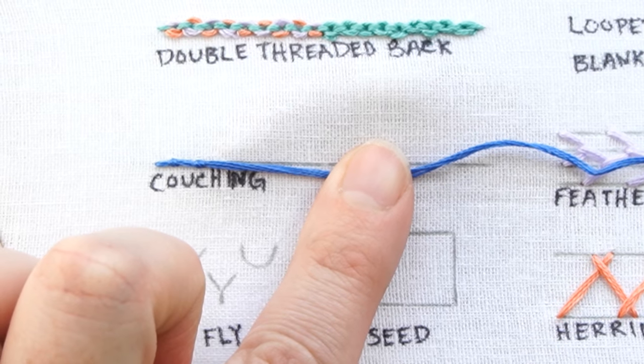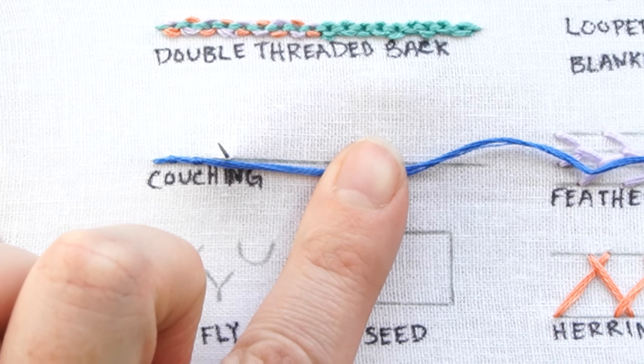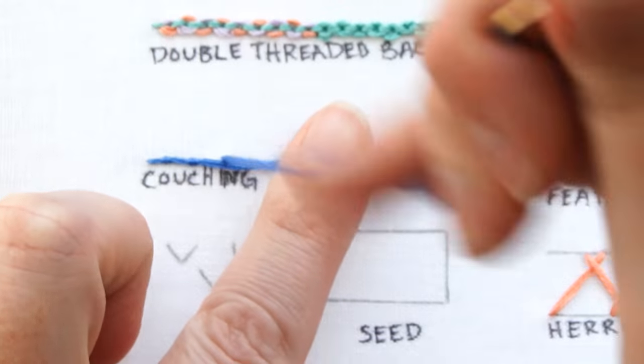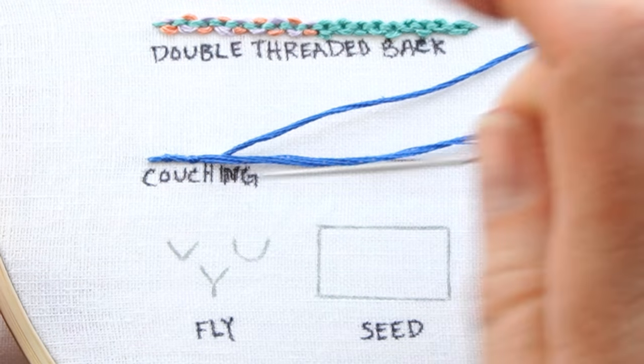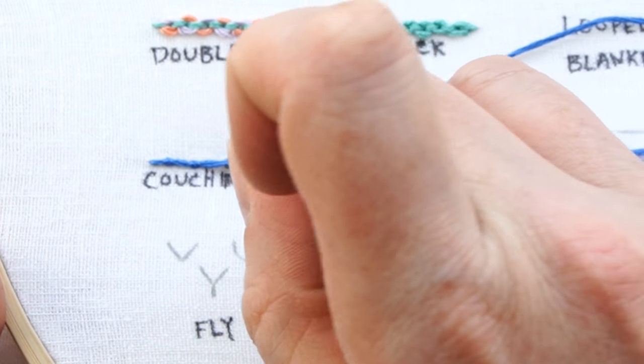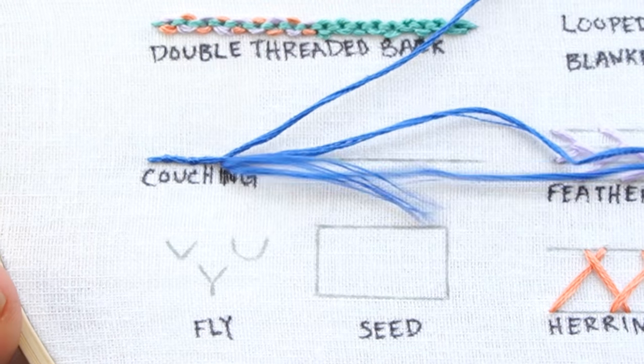Continue along the line to the top of the thread, and then a tiny stitch over the thread to secure it.